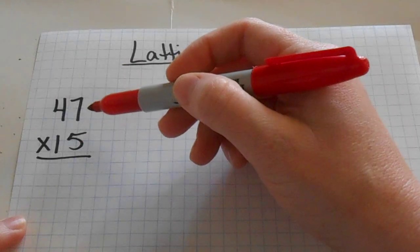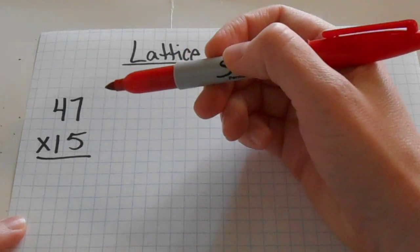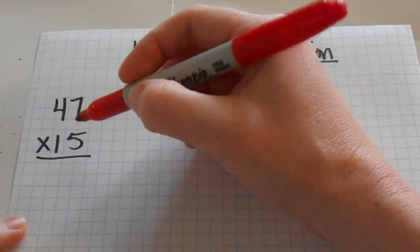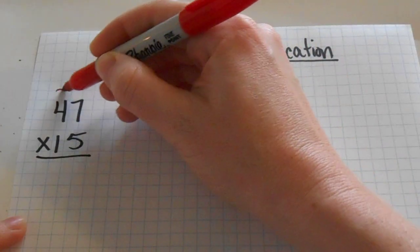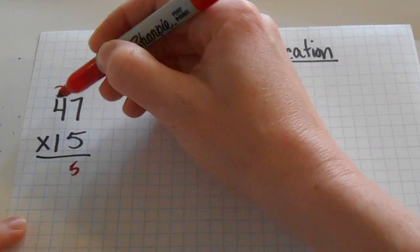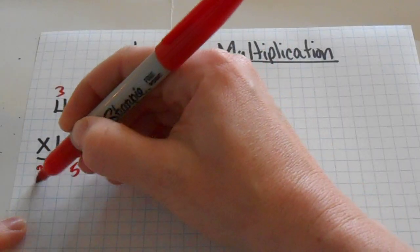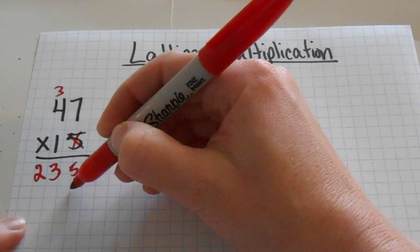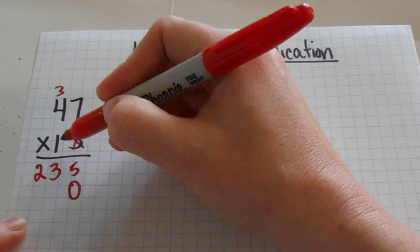So this is how we would set it up back when I learned how to do it in school. We would do 5 times 7. 5 times 4 is 20 plus 3. And then use our placeholder there.